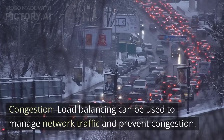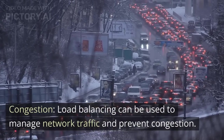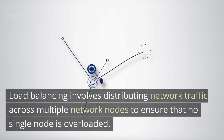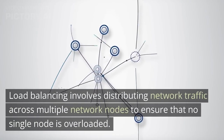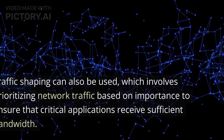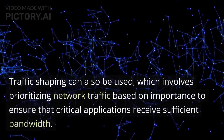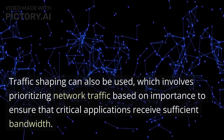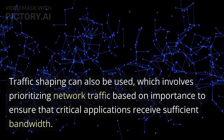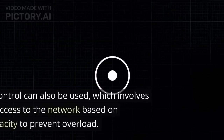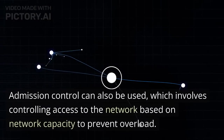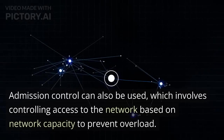Congestion. Load balancing can be used to manage network traffic and prevent congestion. It involves distributing network traffic across multiple network nodes to ensure that no single node is overloaded. Traffic shaping can also be used, which involves prioritizing network traffic based on importance to ensure that critical applications receive sufficient bandwidth. Admission control can also be used, which involves controlling access to the network based on network capacity to prevent overload.